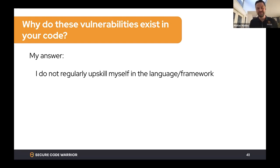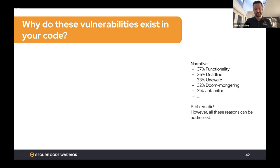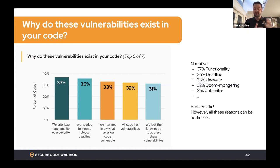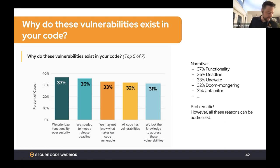My answer for why I would leave vulnerabilities in code: because I do not upskill myself fast enough in languages and frameworks — I have other priorities. Our survey categorizes the reasons as: functionality prioritized over security, the timing/deadline aspect, unawareness — which is a knowledge problem, not a behavioral one — doom-mongering, where people feel everything is broken and all code has vulnerabilities anyway, and unfamiliarity or inability to correctly assess criticality. In any case I think it's problematic, and there are no good reasons.